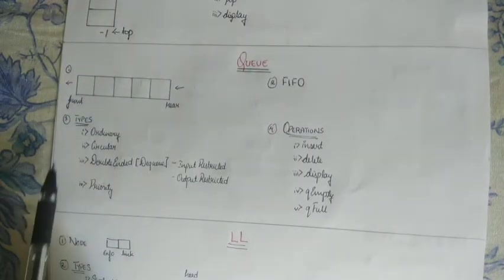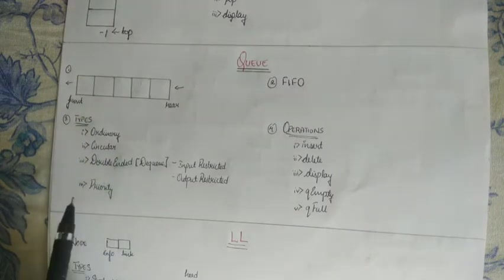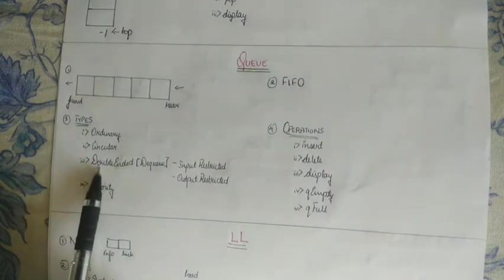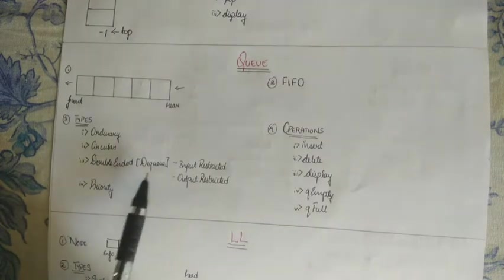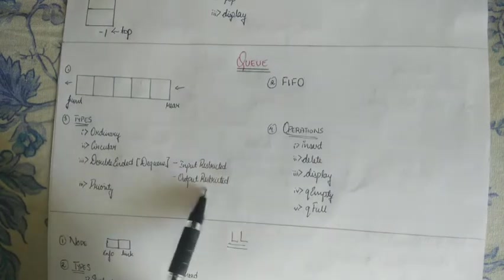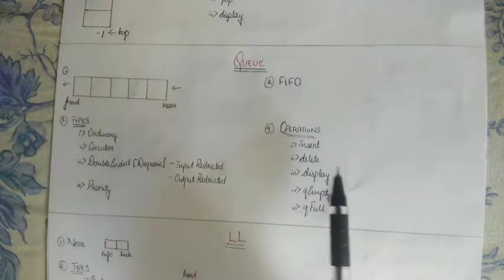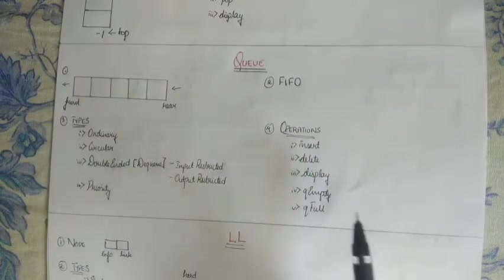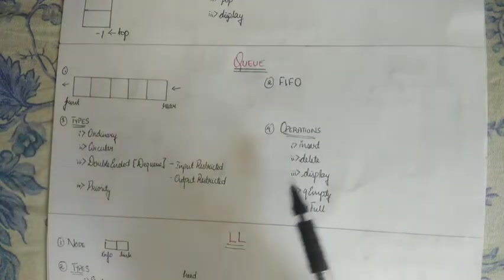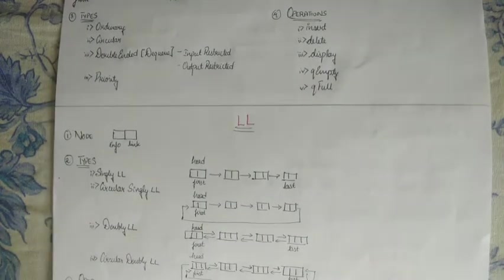And then types of queues. There are basically four types of queues: ordinary queue, circular queue, double ended queue and priority queue. So double ended queue is nothing but DQ. In DQ, you have two types of DQs, that is input restricted DQ and output restricted DQ. Next, the operations that can be performed on queue are insertion, deletion, display, queue empty and queue full. So all these operations are shown in the queue video. You can refer to them. I link them in the iBox and I link the playlist as well.